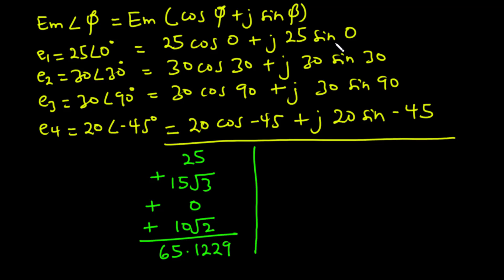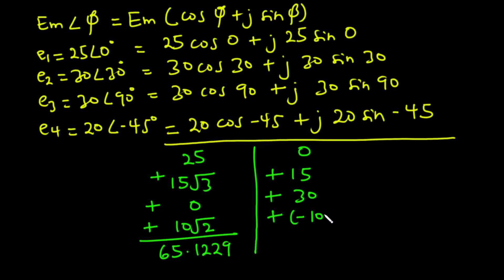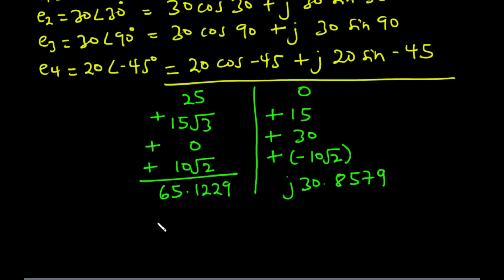Now for the sine components: 25 sin 0 is equal to 0, 30 sin 30 is equal to 15, 30 sin 90 is equal to 30, and 20 sin negative 45 is equal to negative 10 root 2. So 15 plus 30 plus negative 10 root 2 is equal to 30.8579, and then we have the j. So now we have Er, the resultant voltage, to be equal to 65.1229 plus j 30.8579.